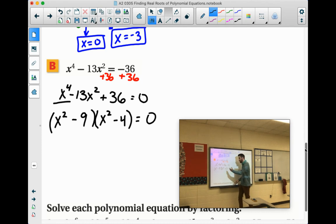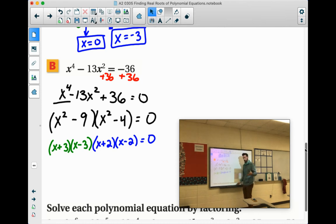But look at that. Difference of squares, difference of squares. So x squared minus 9 would factor into x plus 3 times x minus 3. x squared minus 4 would factor into x plus 2 times x minus 2.